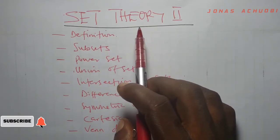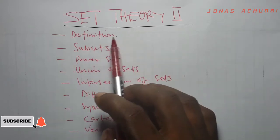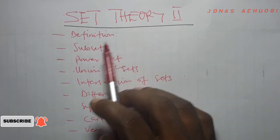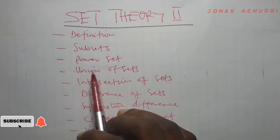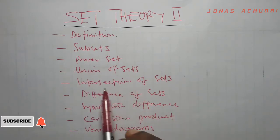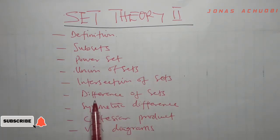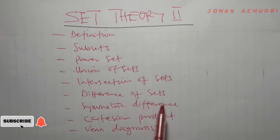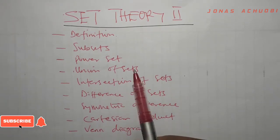In part 1 of this lesson, we had defined sets, subsets, power sets, union of sets, intersection of sets, difference of sets, symmetric difference, Cartesian product, Venn diagrams, and a lot more.